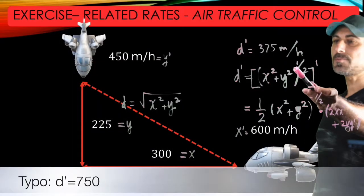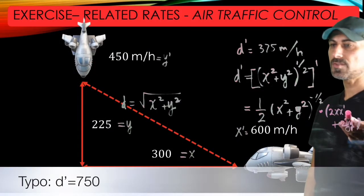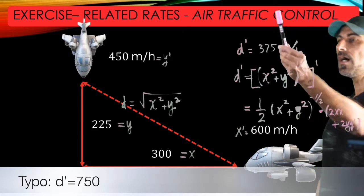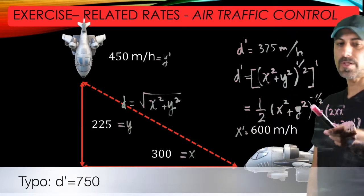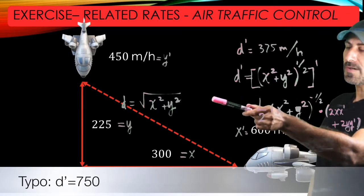Once we get the description of D prime, all we're going to do is to substitute 300 for X, 225 for Y,